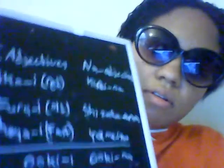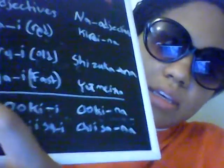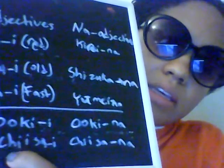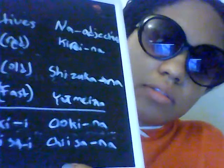There are some adjectives that are both I and Na adjectives. Oki can also be said as oki na, and chisai can also be said as chisai na. Those mean 'big' and 'small' — oki/oki na for big, chisai/chisai na for small.